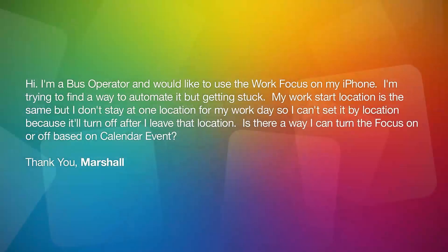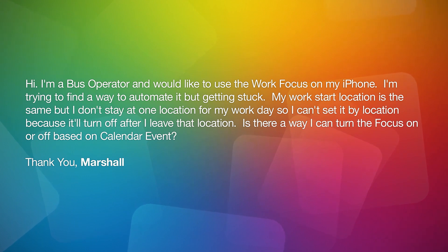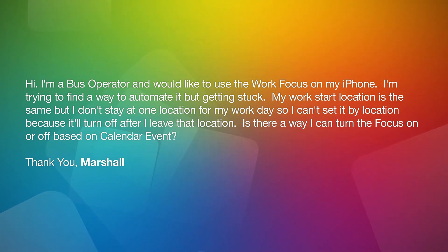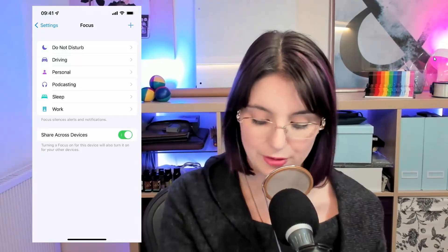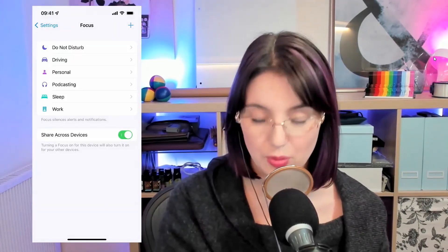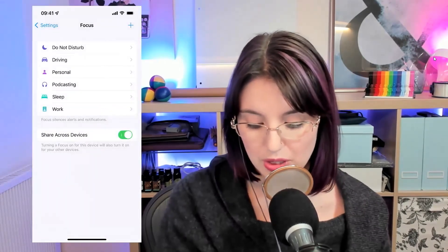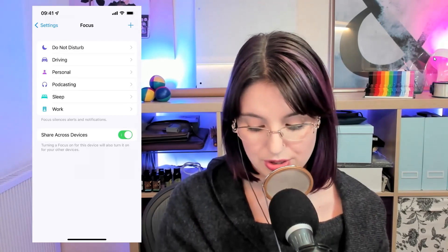The next question comes from Marshall, a bus operator who wants to use the Work Focus on his iPhone. He's trying to automate it but getting stuck. His work start location is the same but he doesn't stay at one location during his workday, so he can't set it by location because it'll turn off after he leaves. He asks: is there a way to turn the focus on or off based on a calendar event? In Settings under Focus, there are different focus modes — Do Not Disturb, Driving, Personal, Sleep, and Work — which is the one Marshall wants to use.